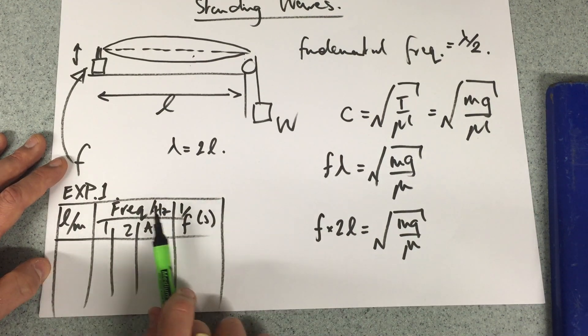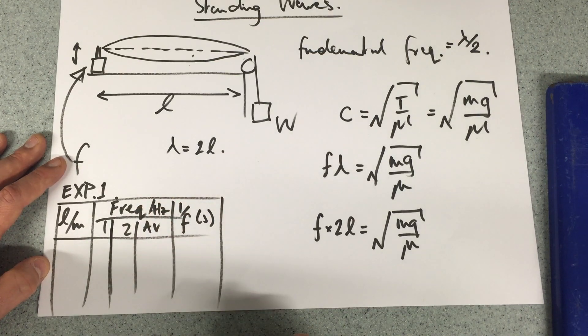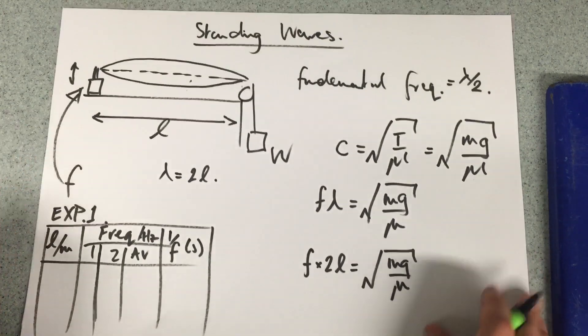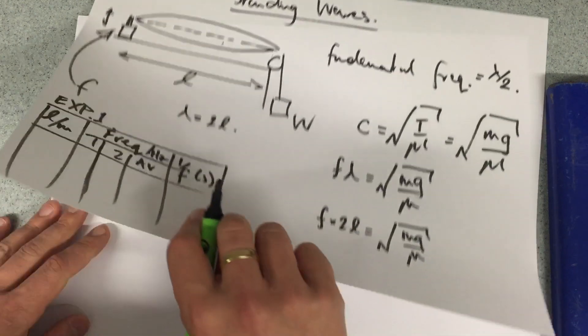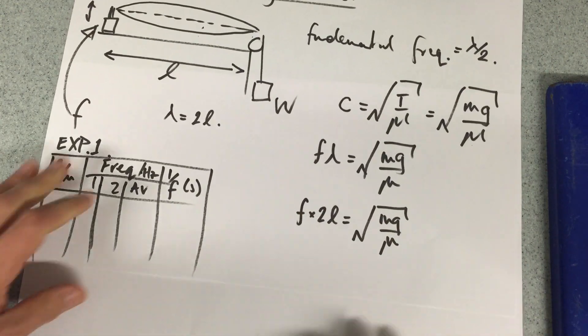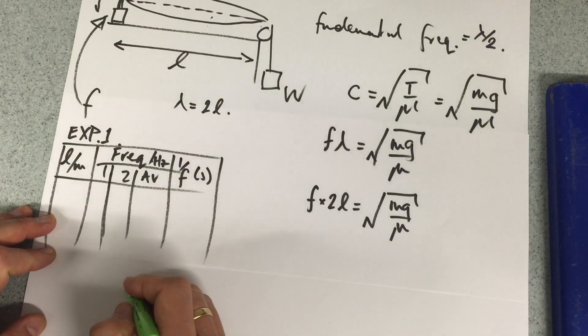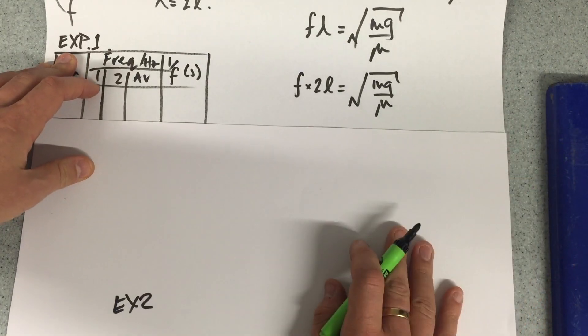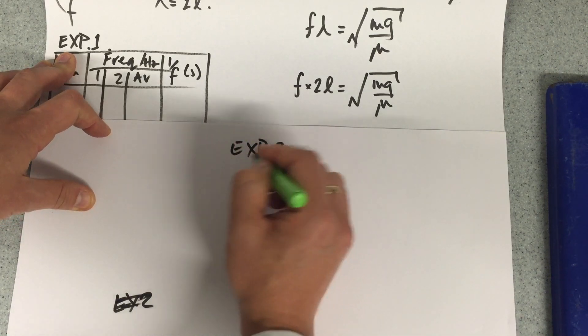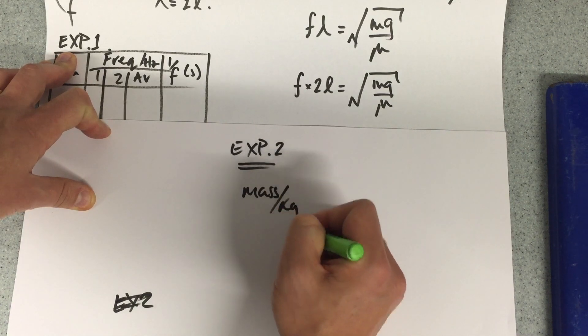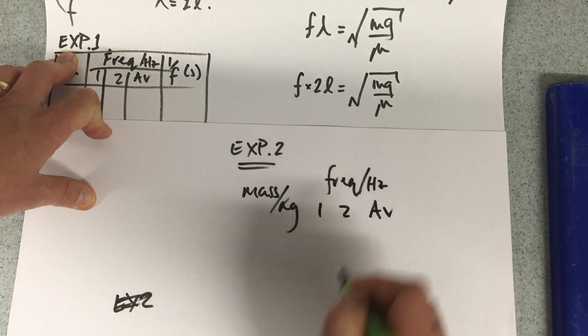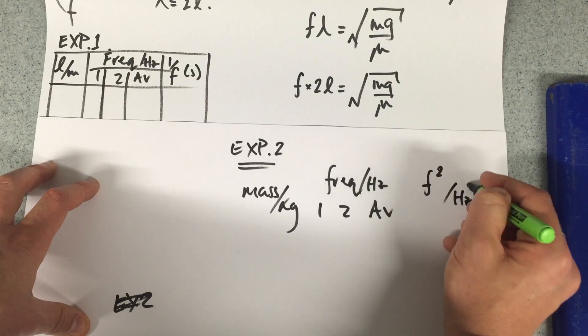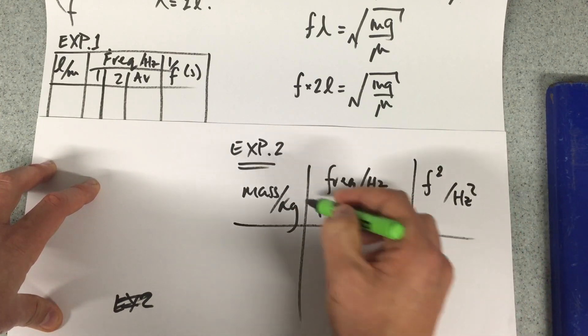Experiment number 2: we can actually change the mass here with a fixed length and look at the frequency. A bit harder to work out, but let's show you the table of results we'll need for that. We'd have the mass, which is our independent variable. We'd look at the frequency in hertz, once, twice, an average. And then finally we'd be looking at the frequency squared in hertz squared, and I'll show you why in a minute.